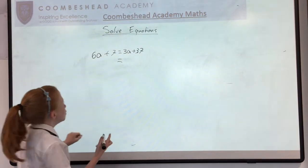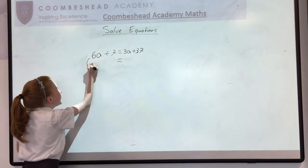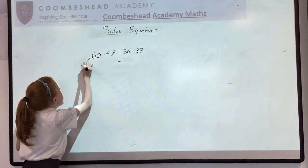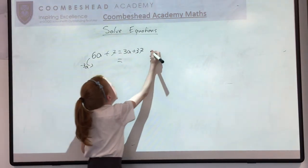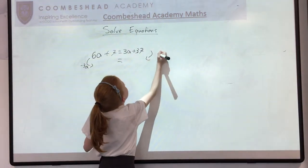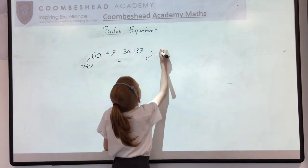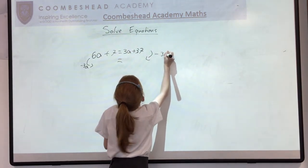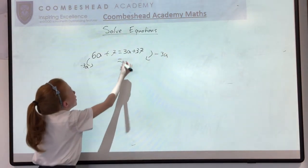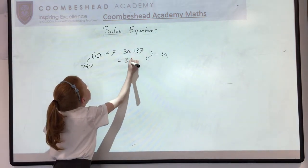So we have addition, so we're going to take away 3a, which from both sides. You've got to be able to do the inverse from both sides. So it's 3a on this side, which will leave us with 37.